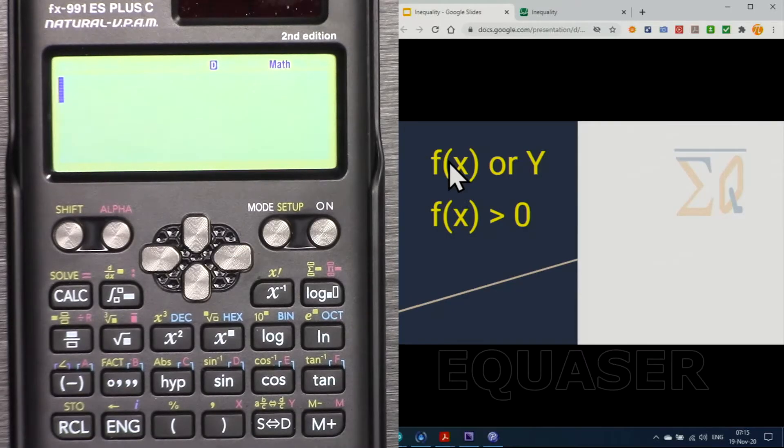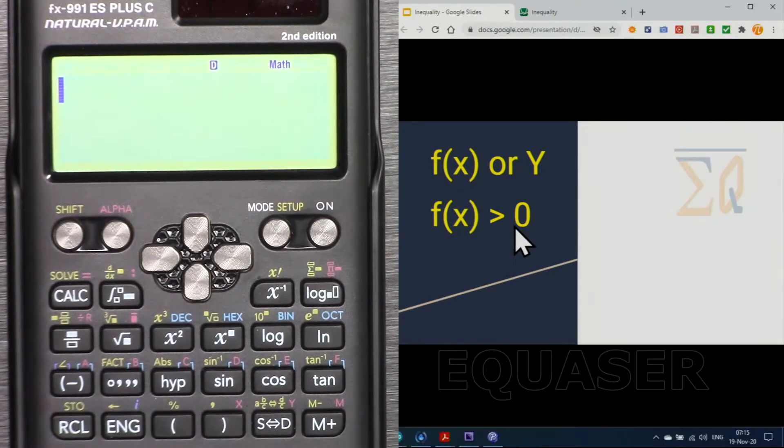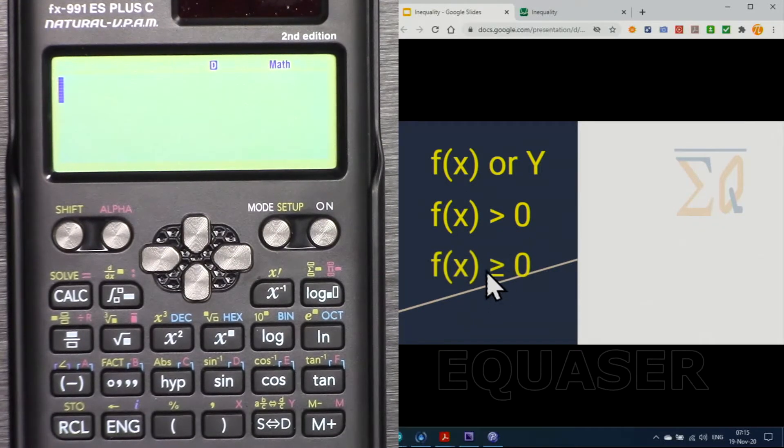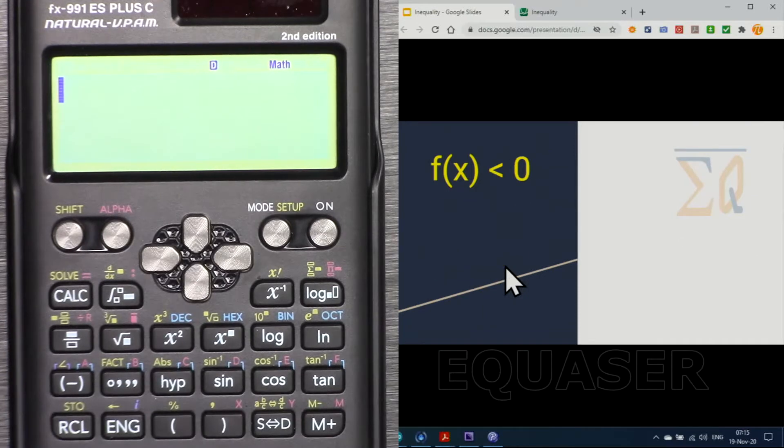We will evaluate our function which is called f of x, or we sometimes call it just y. So y greater than 0, equal or greater than 0, and smaller than 0, or f of x or y smaller or equal than 0.